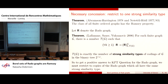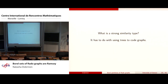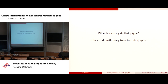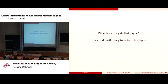So to get a positive answer to the KPT question for the Rado graph, we have to restrict to copies which have the same strong similarity type. That's a given.